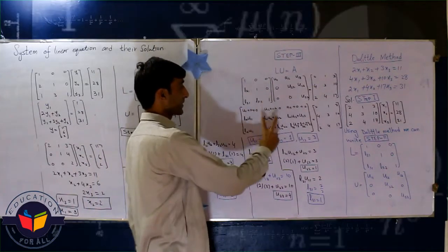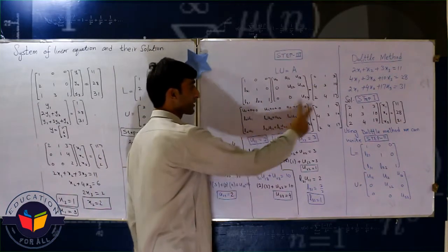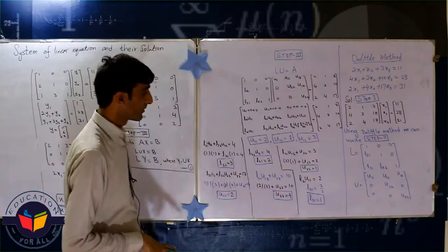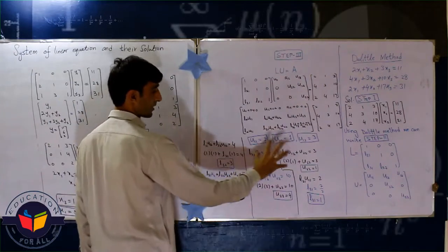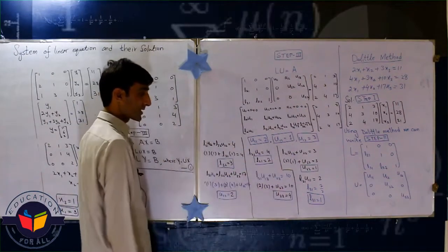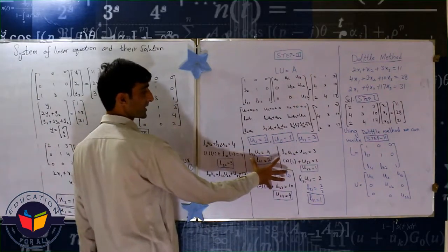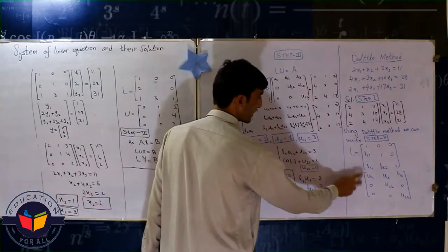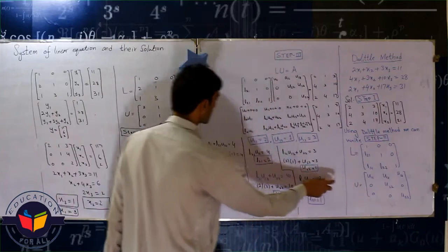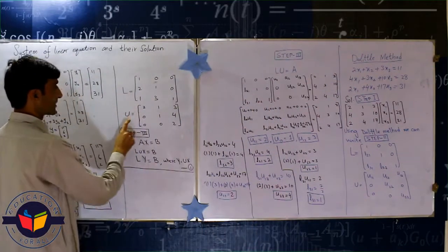Now we multiply both of them and get this. After comparing all of these values we get U11, U12, U13, and all of these values step by step. After getting these values, we use this value in L and U, and L and U take this form. This one is L and this one is U.